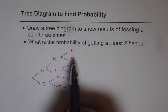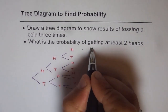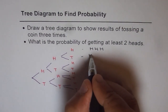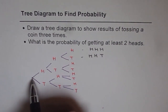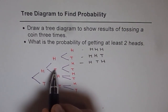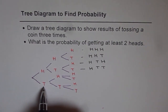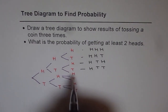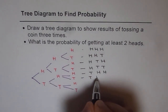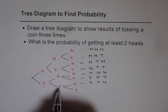Now let's write down what you get ultimately. Going through each branch: head, head, head gives three heads. The next is head, head, tail. Then head, tail, head. Then head, tail, tail. Now with the tail-first branch: tail, head, head. Then tail, head, tail. Then tail, tail, head. And finally tail, tail, tail.